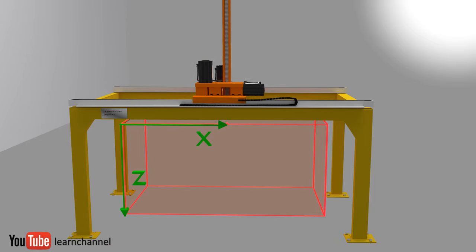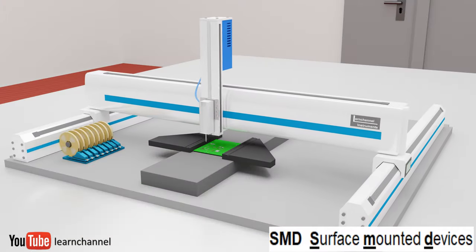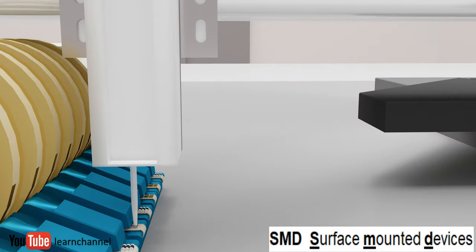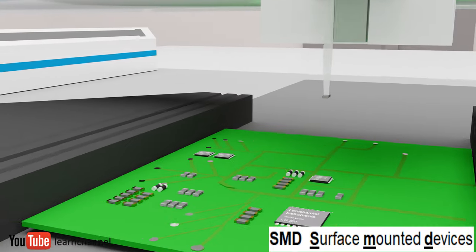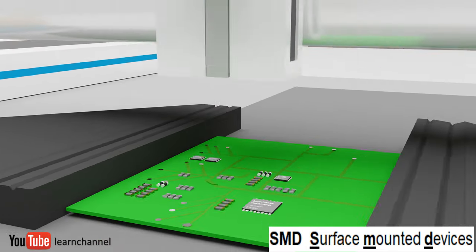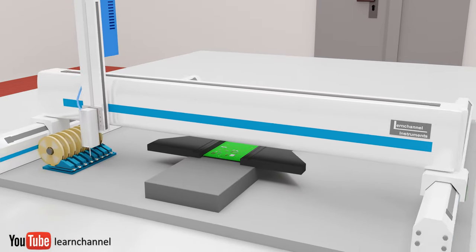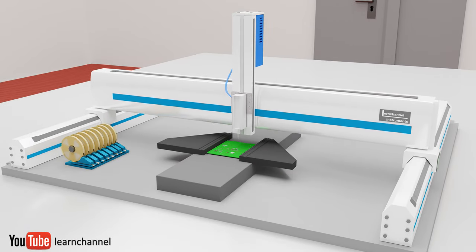You can find this robot not only handling heavy weights. Here, you see an SMD assembly system with a 3L kinematic. Robots with three linear axes provide the advantage of high positioning accuracy because the position of the axis can be measured directly.